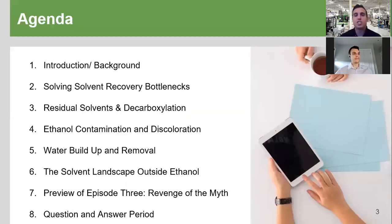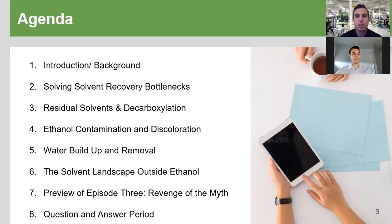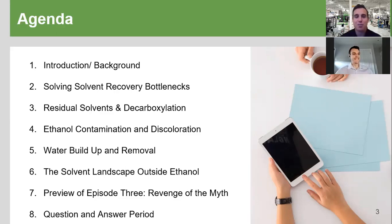To start, a quick agenda of what we'll be going through today. First we'll go through an introduction and background, and for those who missed webinar episode one, a quick recap. We'll transition into the heart of this discussion: solving the solvent recovery bottlenecks. Then we'll cover residual solvents, decarboxylation, ethanol contamination and discoloration, water buildup and removal, the solvent landscape outside of ethanol, and finish with a sneak preview of episode three and a Q&A period.